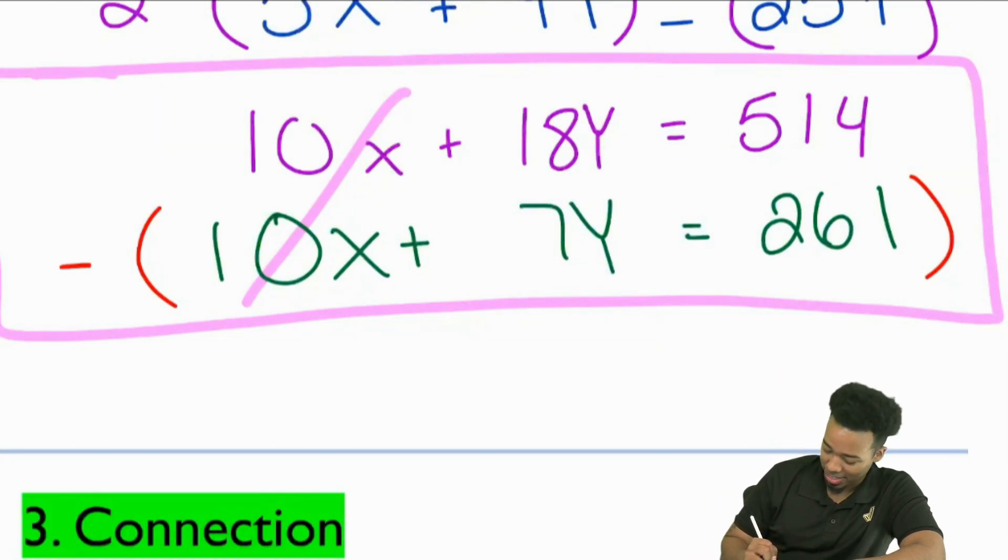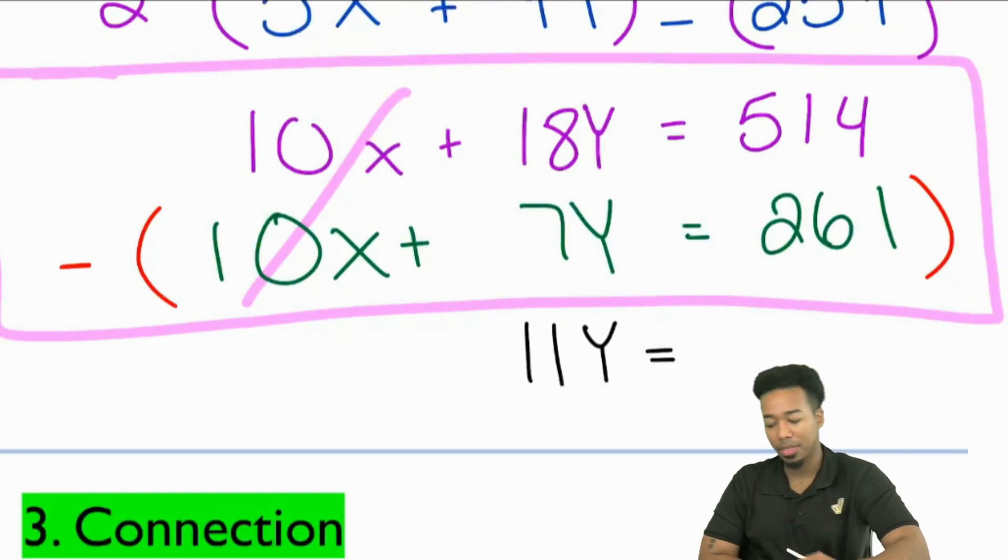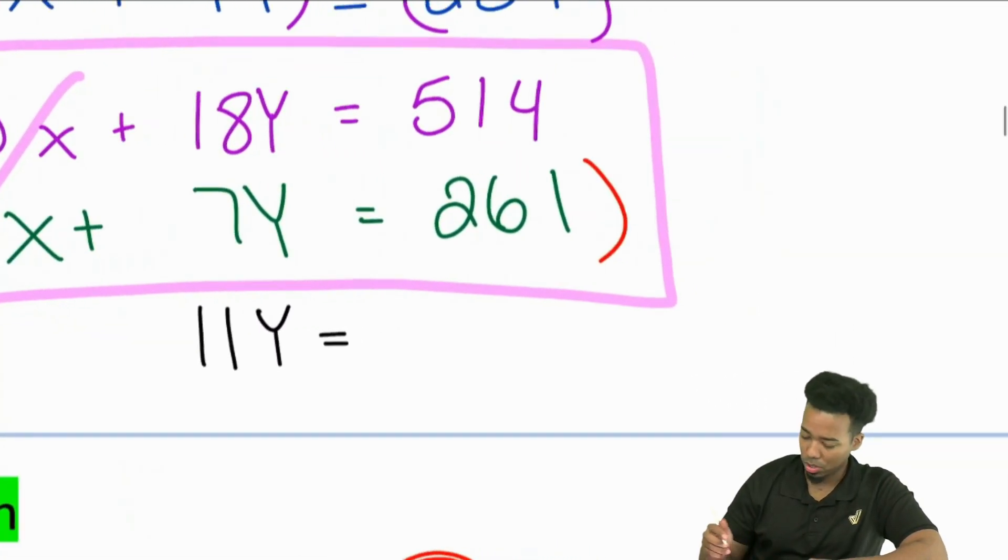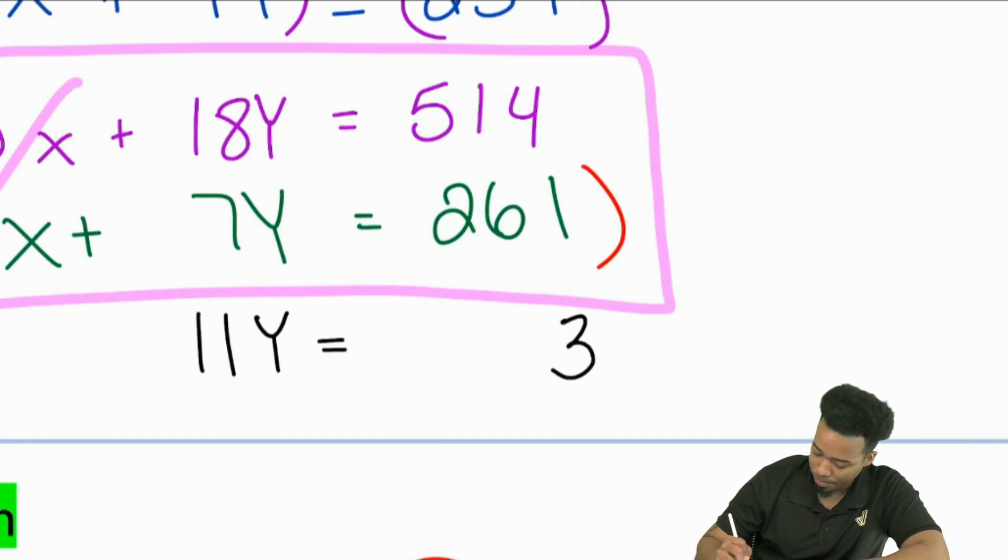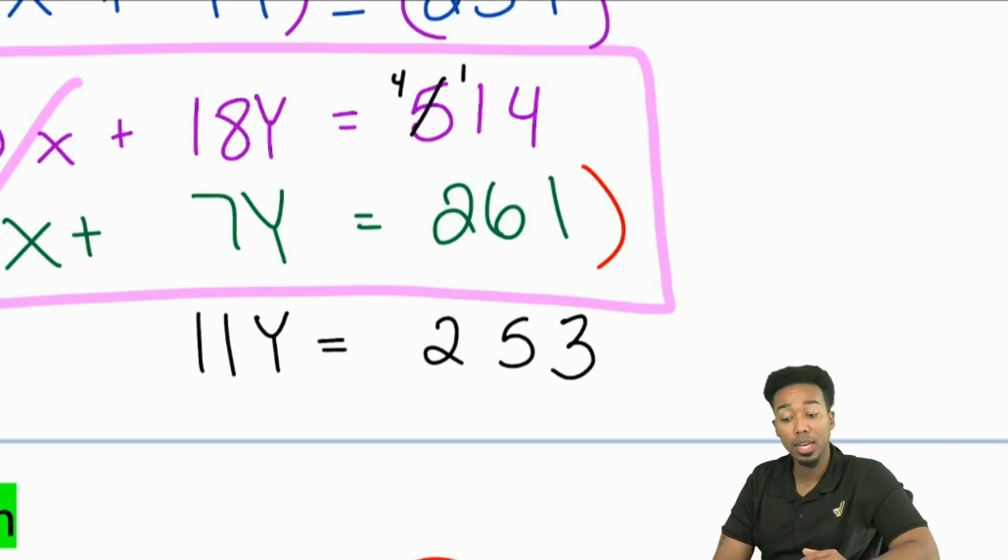And then what's 514 minus 261? What's that going to be? Some of us are throwing out 253. Let's make sure that we got that right. Let's just go ahead and double check here. Four minus one, that's going to be three. One minus six can't do that, so we'll borrow. Eleven minus six, that's going to be five. Four minus two, that'll be two. So yeah, that'll be 253. Okay, sounds good. No worries if you forgot that we're subtracting. We're there. So now we have 11Y equals 253.